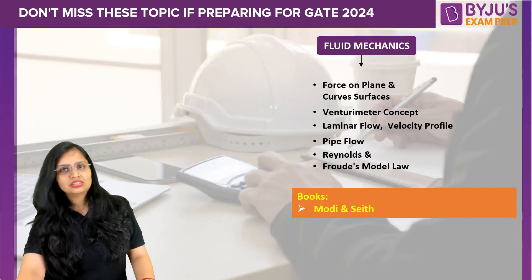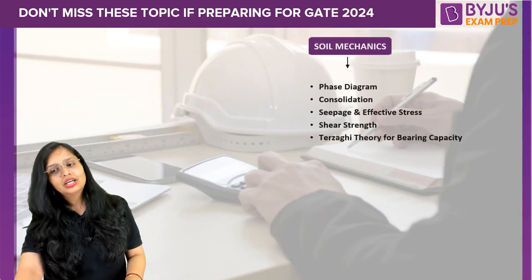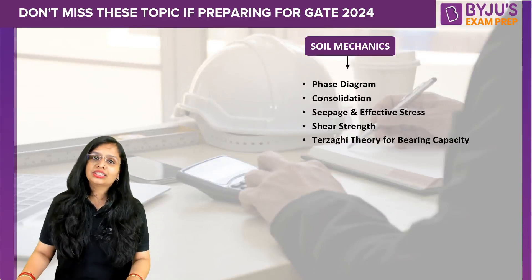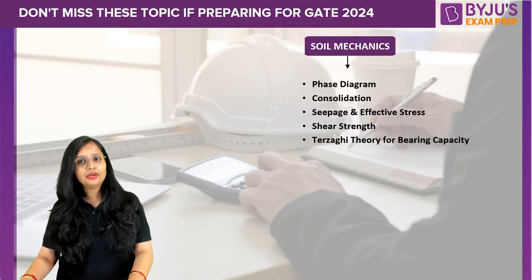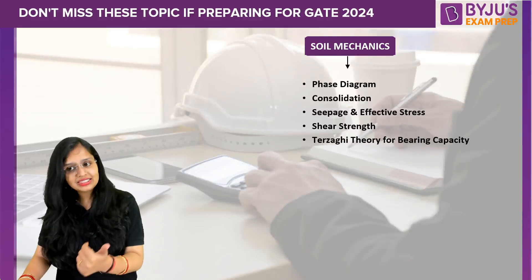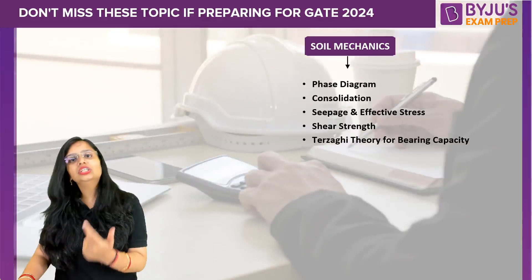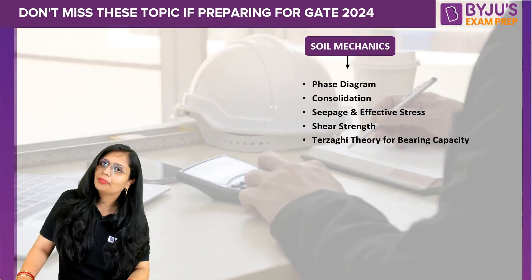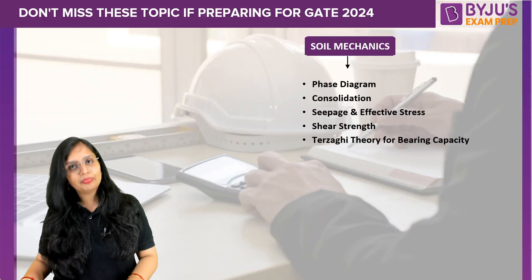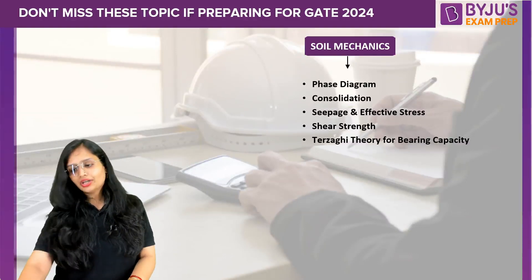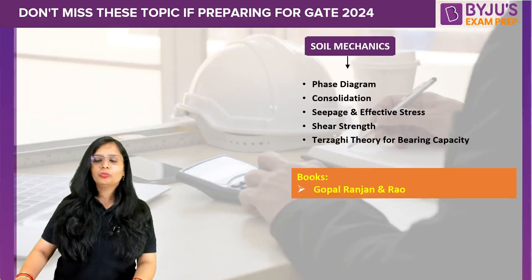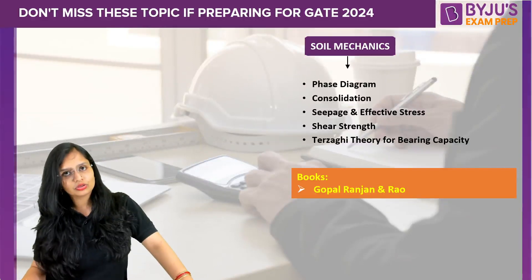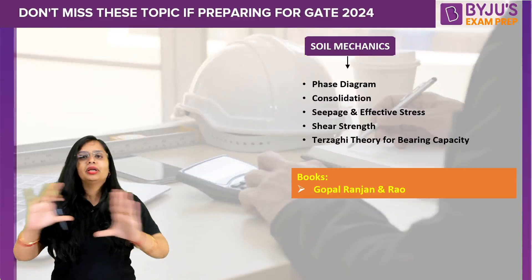Soil Mechanics carries 14 to 16 marks, so it has great weightage. Topics to study include phase diagram, consolidation, seepage and effective stresses, shear strength, and Terzaghi's theory for bearing capacity. Don't leave these topics. For books, you can refer to Gopal Ranjan and Rao, or BC Punmia — both are good references.